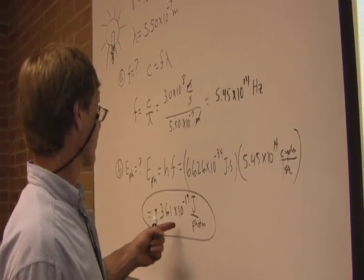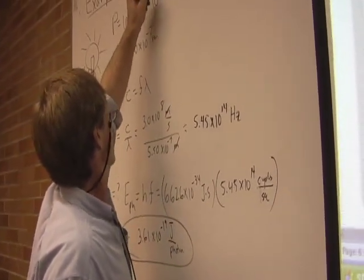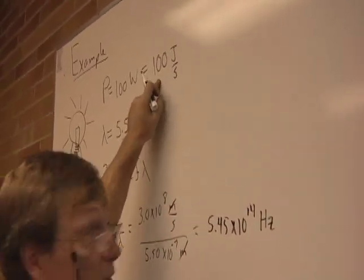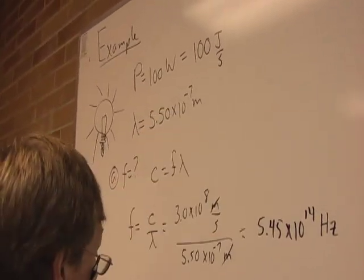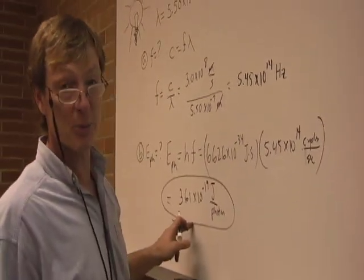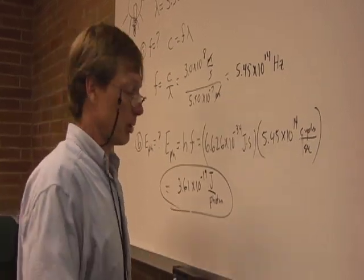Because when you get right down to it every second, if it's 100 watts, 100 watts is also, that's just 100 joules per second. So in one second, if I'm putting out 100 joules of energy, and each photon's only 3.6 times 10 to the minus 19, I must be putting out a mess of photons. So let's figure out what we are putting out.